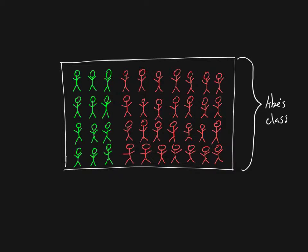Let's say that some of the students — these green students over here — are happy students. They're in a good mood today, the day I decide to do this study. And these students over here are grumpy. They might be grumpy for a number of reasons, but the main reason most of them are grumpy or happy is because of the change I made. The unhappy students don't like the change I made to the class, and the happy students like the change I made.